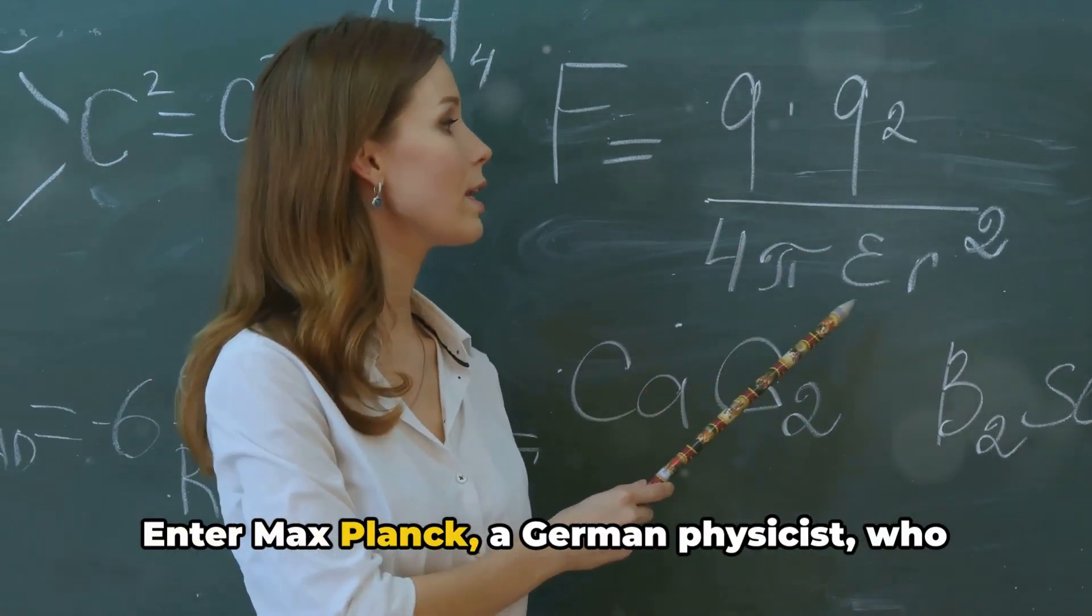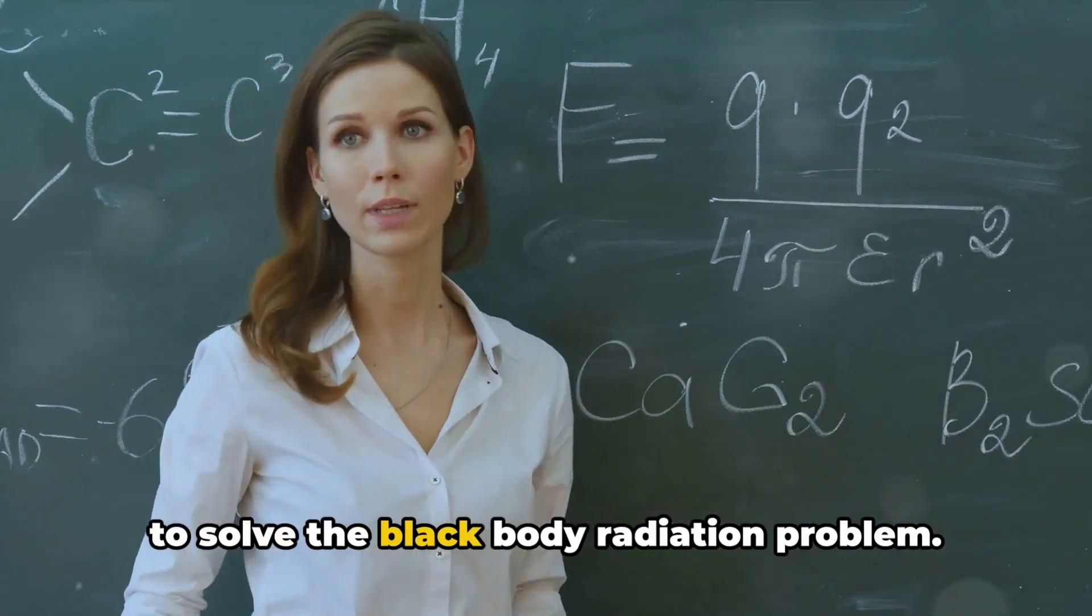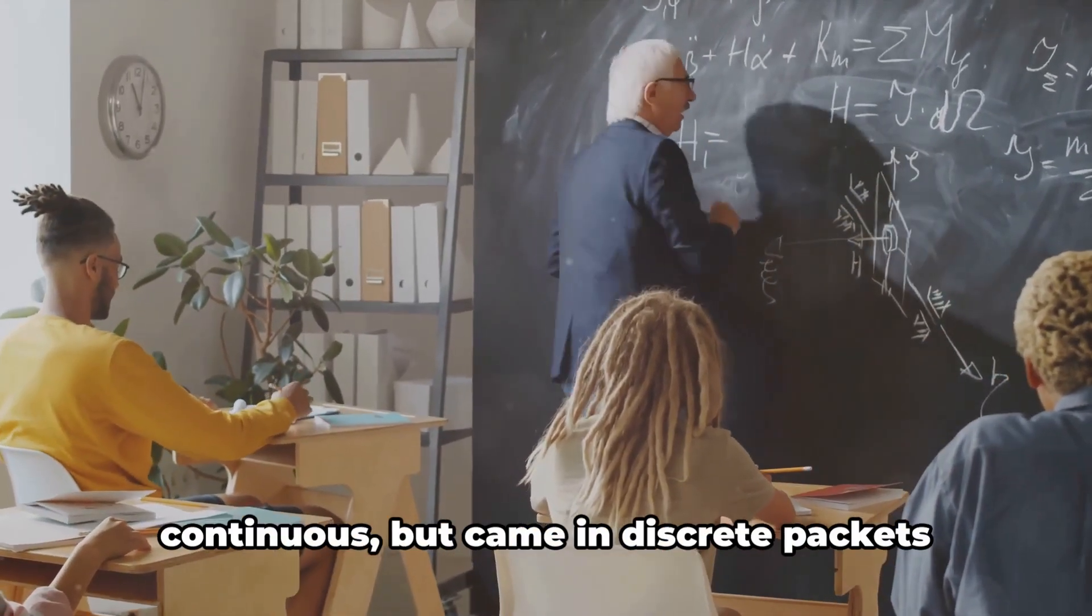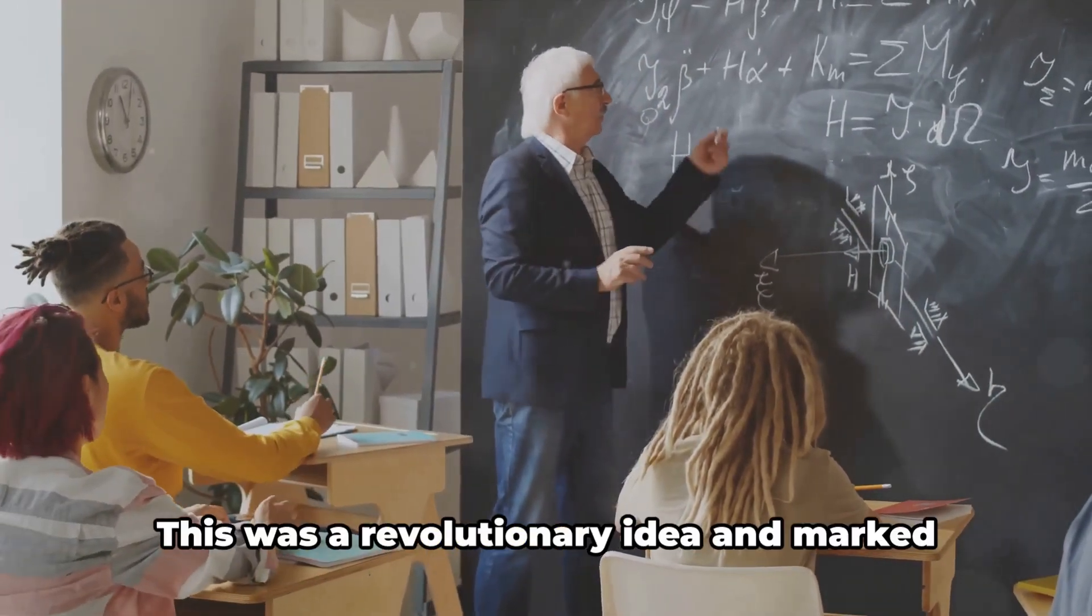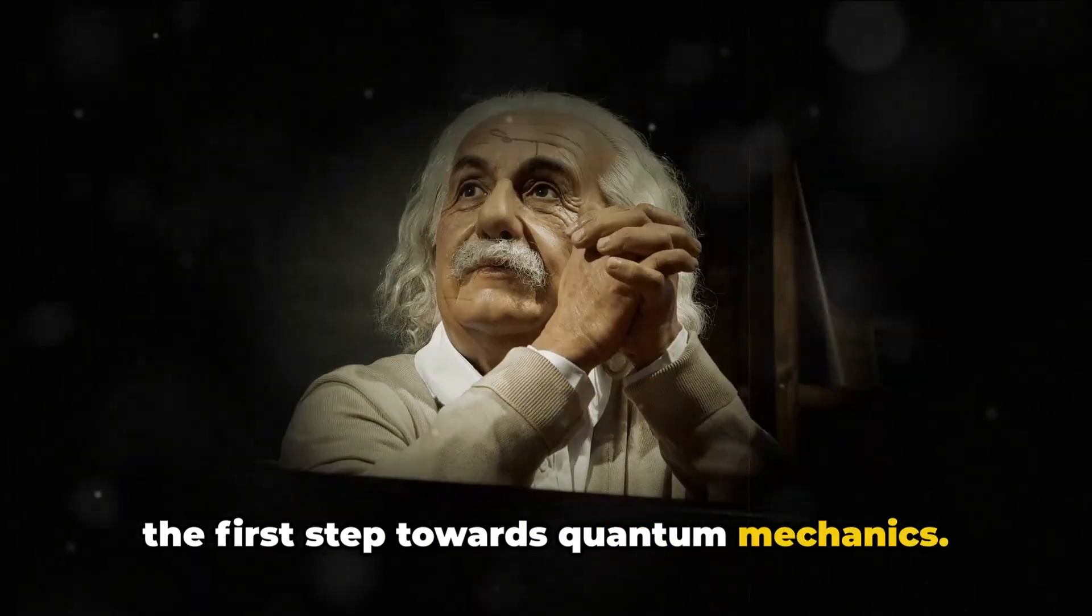Enter Max Planck, a German physicist who in 1900 made a daring proposal to solve the black body radiation problem. He suggested that energy was not continuous, but came in discrete packets or quanta. This was a revolutionary idea and marked the first step towards quantum mechanics.